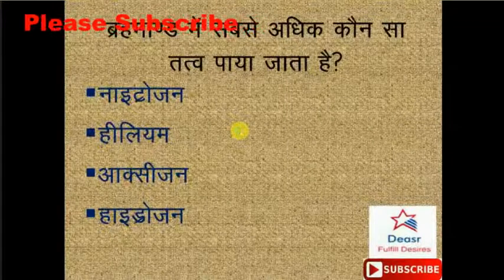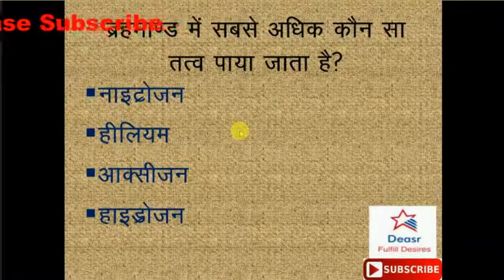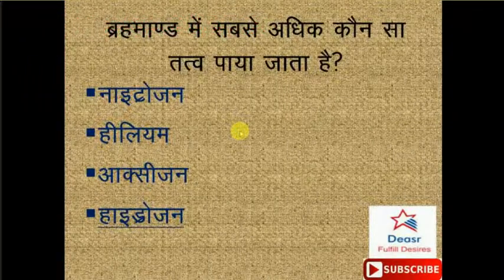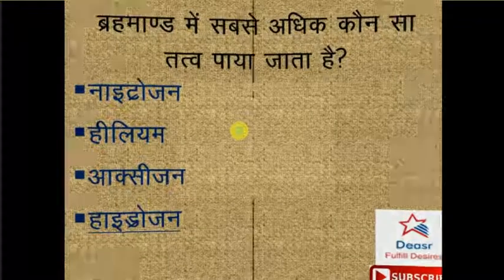Brahmaand mein sabse adhik kaunsa tatva paaya jaata hai? Yahan pe options hain hamare paas: nitrogen, helium, oxygen, hydrogen. Iska sahih jawab hai option number D - hydrogen.